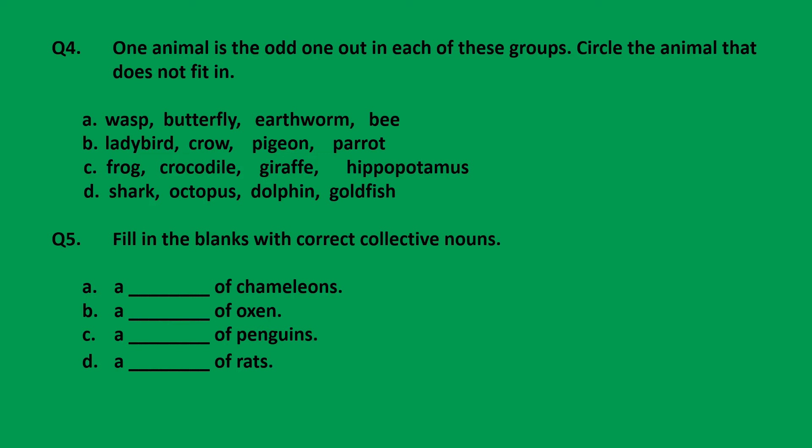Group A: wasp, butterfly, earthworm, bee — which one is odd here? Circle it. Group B: ladybird, crow, pigeon, and parrot — among these four, which one is odd? Find out and circle it.